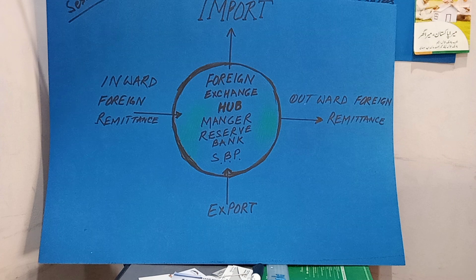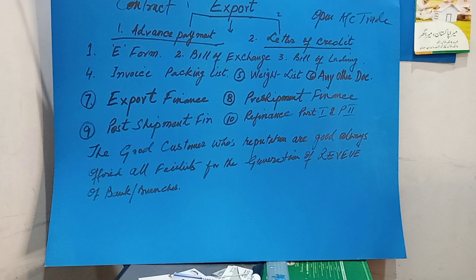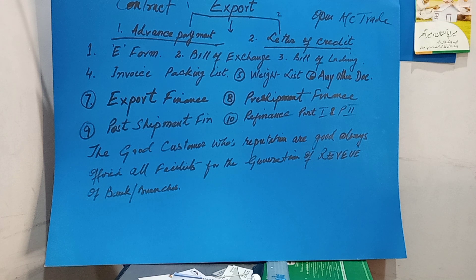This is the 11th session on export and its documents. The E-form is necessary to export goods from Pakistan. Required documents include the bill of exchange, bill of lading, invoice, packing list, weight list, and any other documents. The import LC comes from outside the country — a foreign bank opens the LC and advises it to the local or foreign exchange bank, which then hands it over to the exporter, as they have a predetermined arrangement or proforma invoice or sale contract.